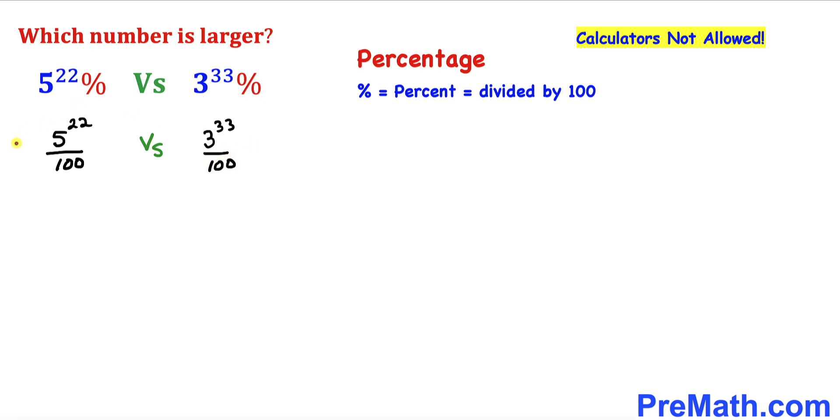Now we can multiply both sides by 100, and here we can see the 100s cancel out. So we end up with 5 to the power of 22 versus 3 to the power of 33.